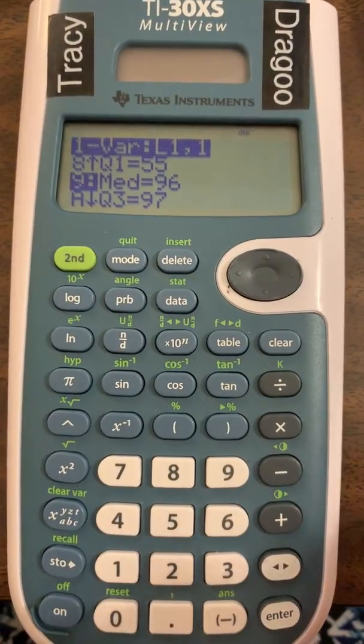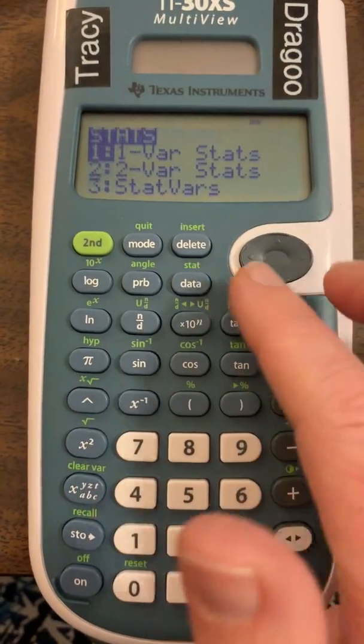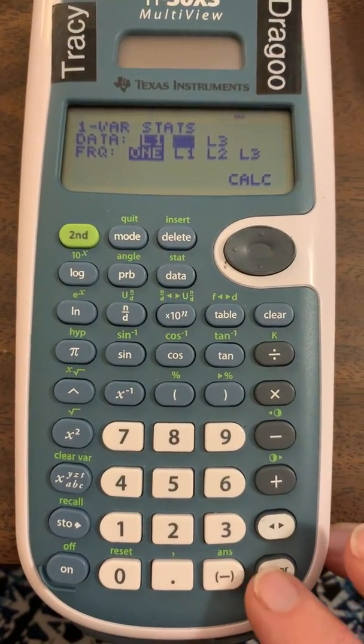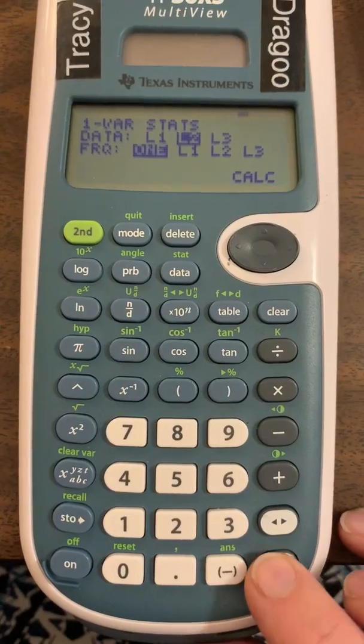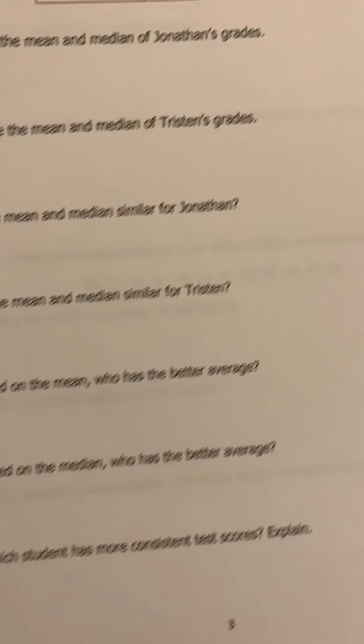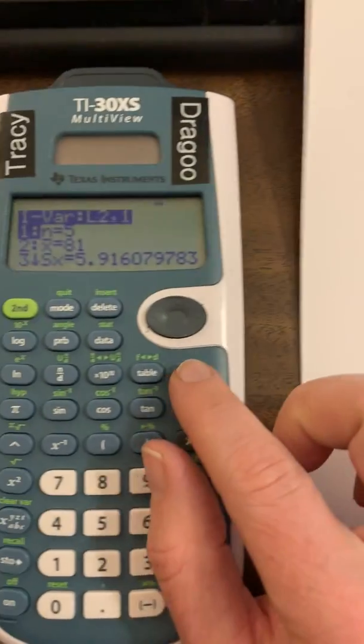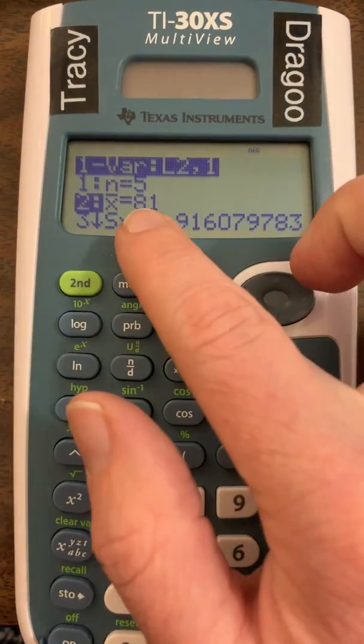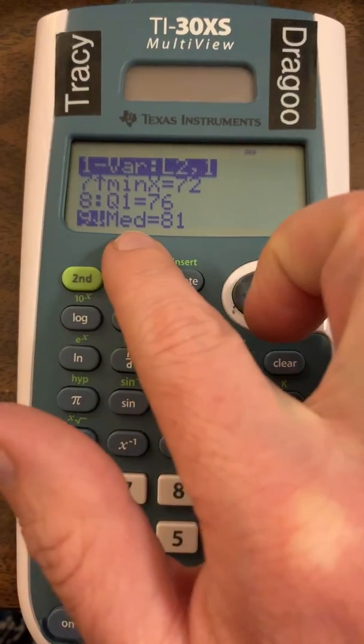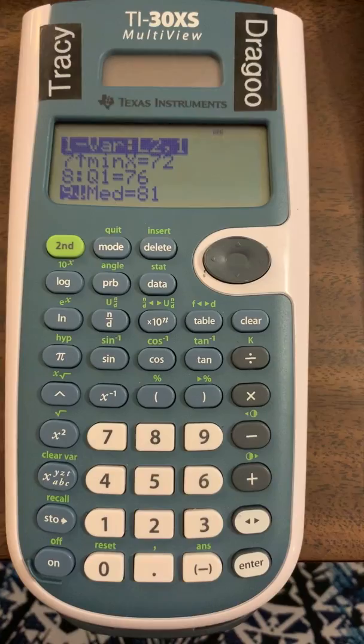There's Jonathan, and what's really nice is you can go back to the stats, do it again and change it to the second column to get the same stats for Tristan's column. Remember we put his in the L2 column. So his mean is 81. And if you come down to the ninth value, the median for Tristan is also 81. And that's how you do it.